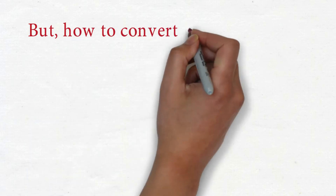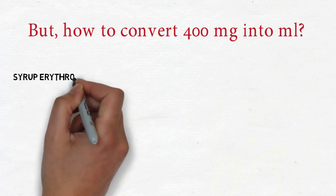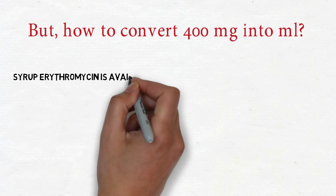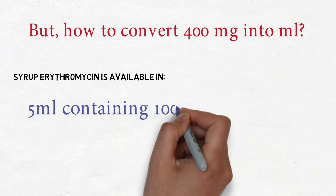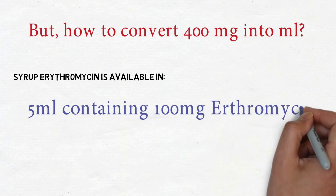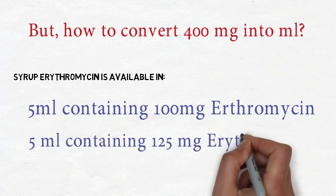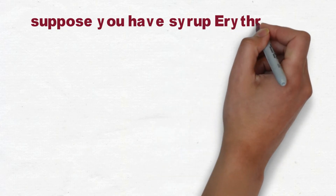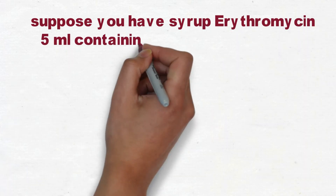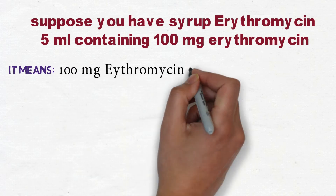But how do we convert 400 mg into ml? Erythromycin syrup is available in two concentrations: 5 ml containing 100 mg, or 5 ml containing 125 mg. Suppose you have erythromycin syrup with 5 ml containing 100 mg — which means 100 mg is contained in 5 ml.